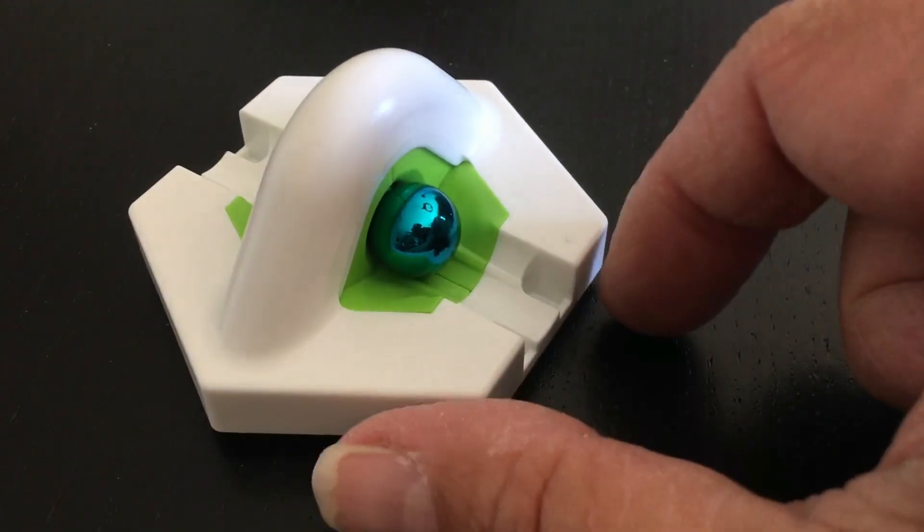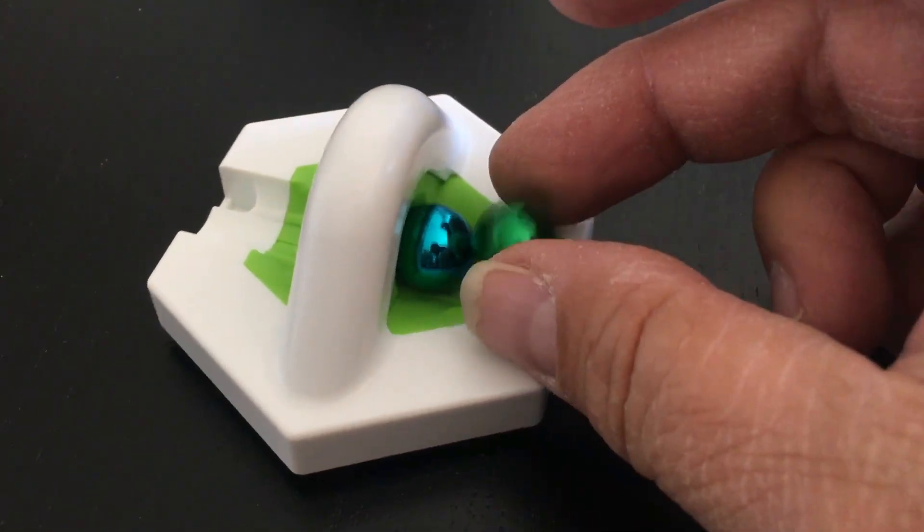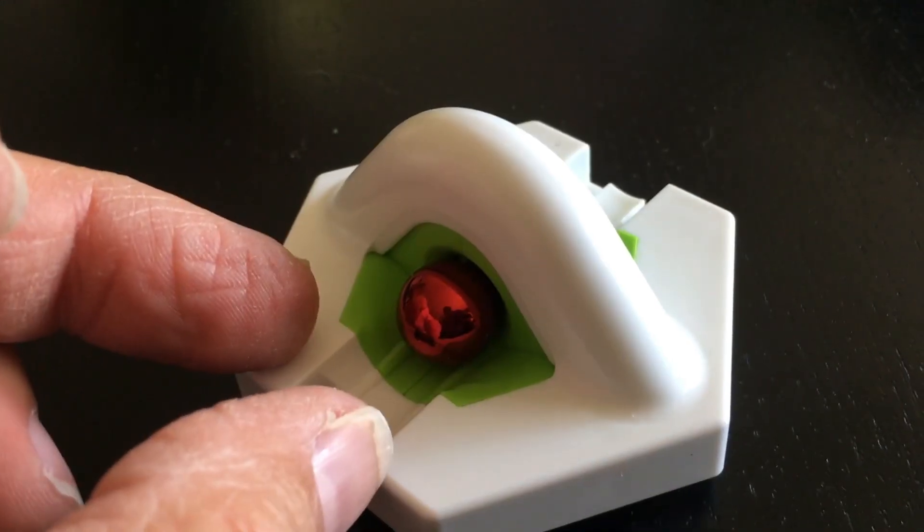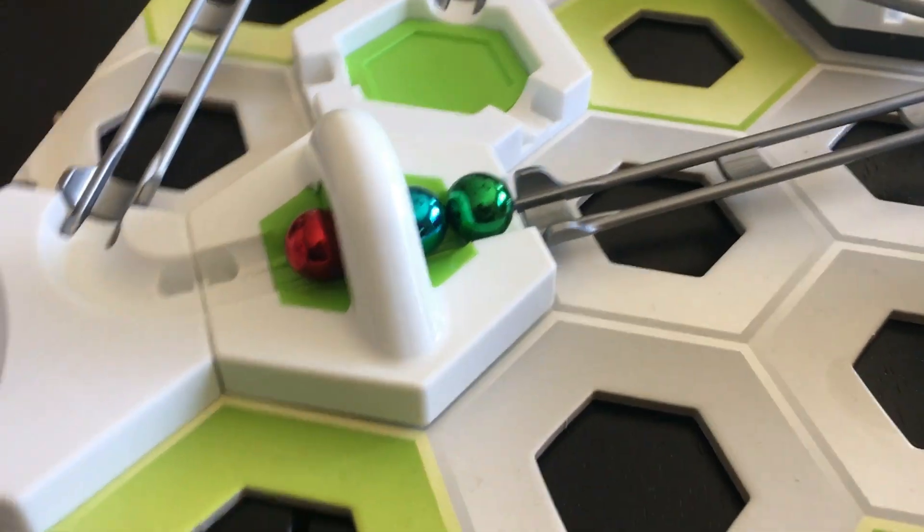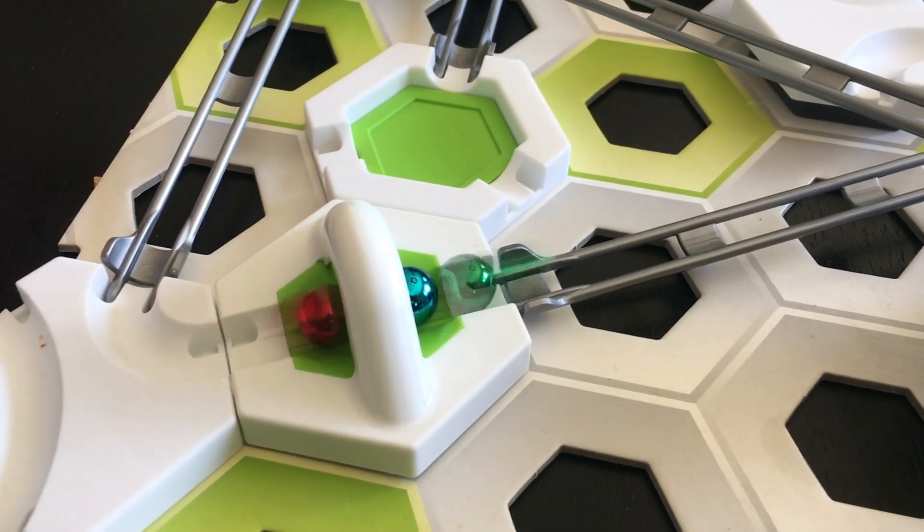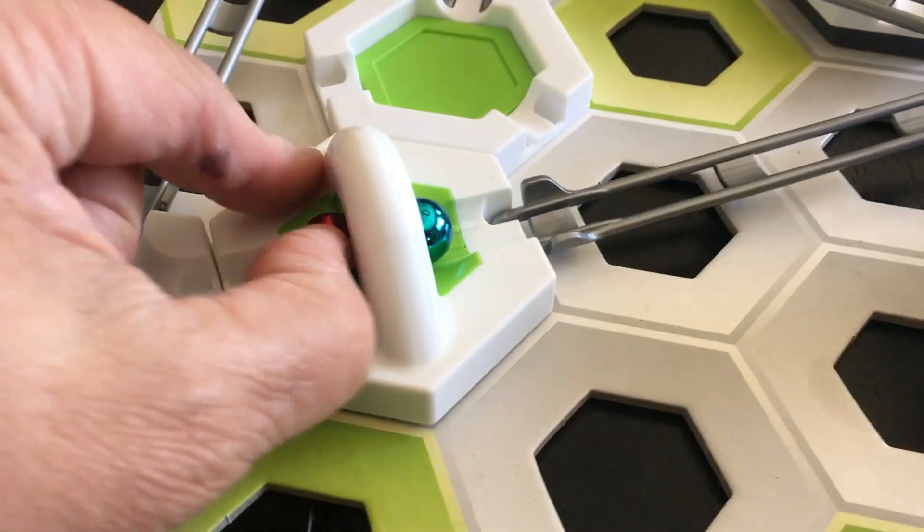What you need to do to set it up first is two marbles on the far side, the side that the marble will continue on. And then what happens is when one marble approaches from the incoming side, it will hit the wall or the magnet and cause the farthest marble to shoot out and launch.